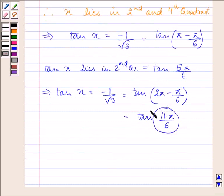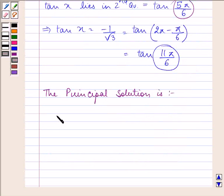And this is the value in the fourth quadrant. So the principal solution is 5 pi by 6 and 11 pi by 6.